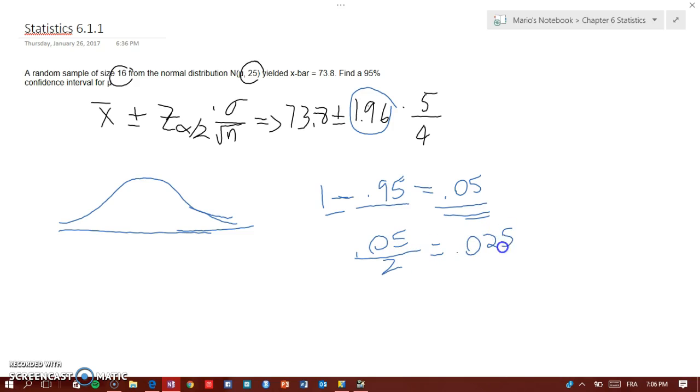And this will give you the limit, which is 0.025 here and 0.025 here, and it's actually going to be negative.